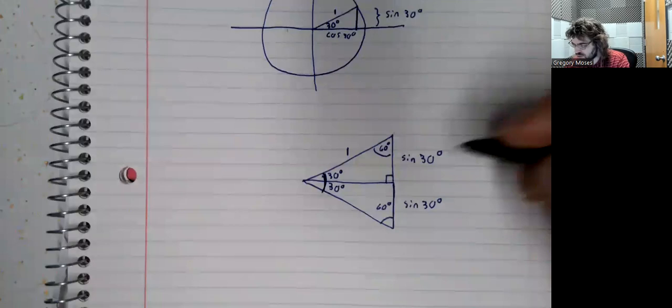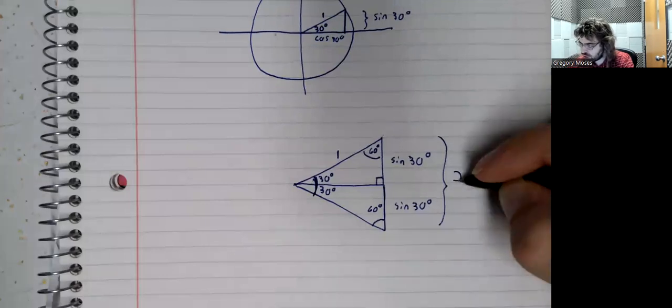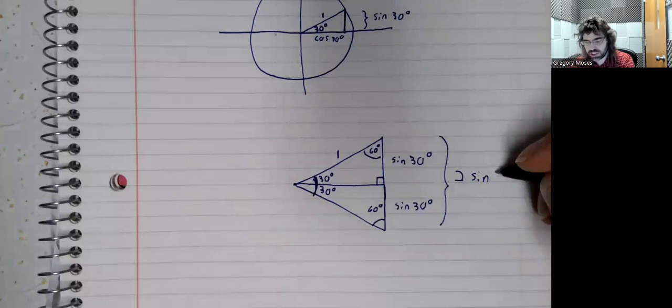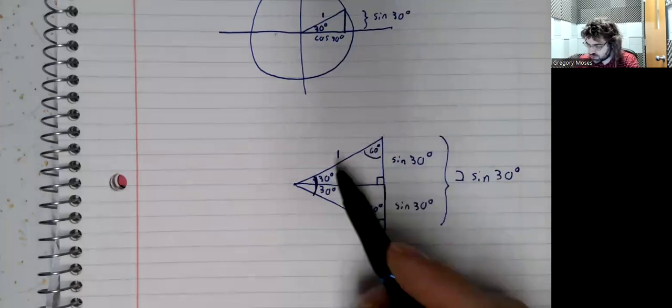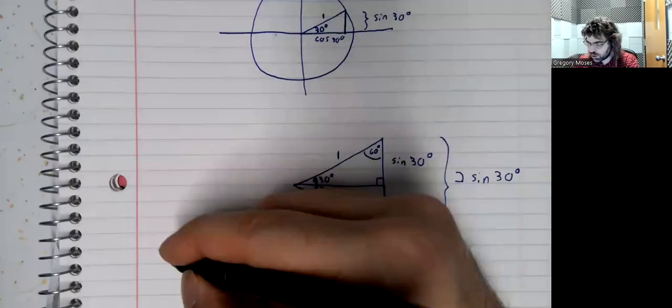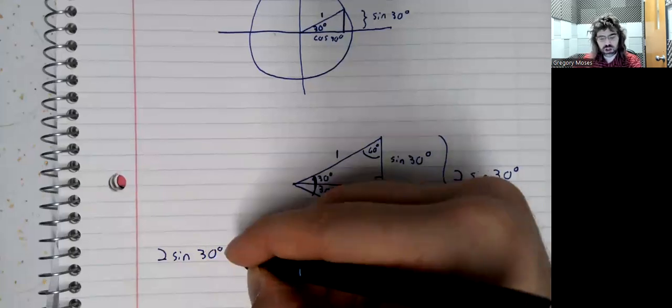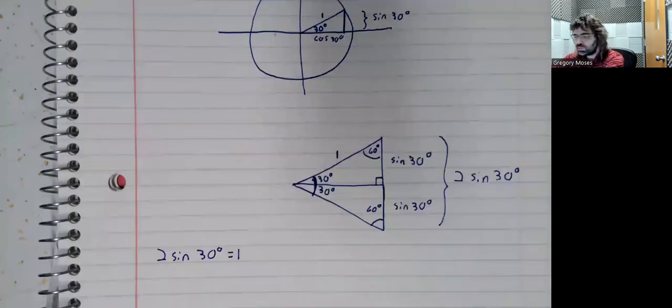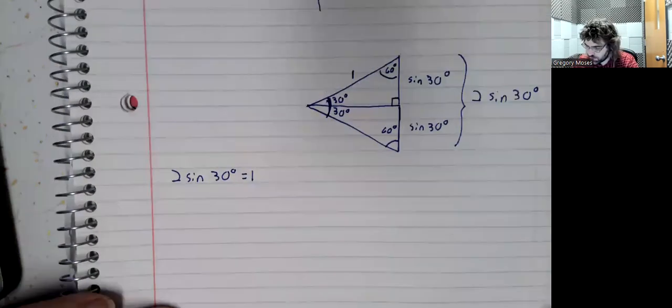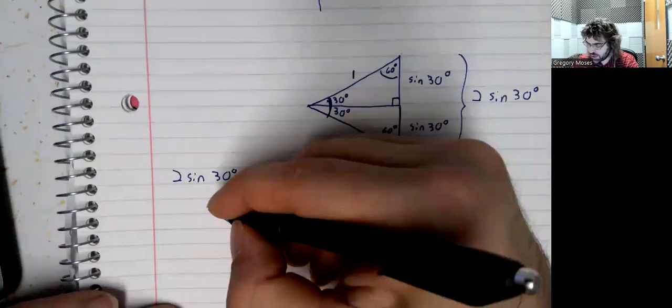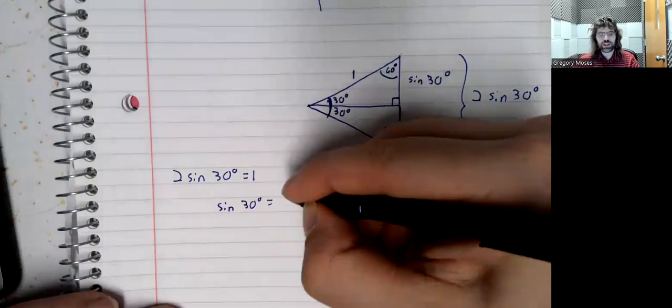And this side, as we see, is twice the sine of 30 degrees. And this side is 1. So if the sides are going to be the same, this equality must be true. And dividing both sides by 2, the sine of 30 degrees is 1 half.